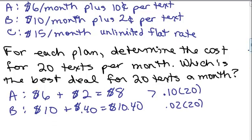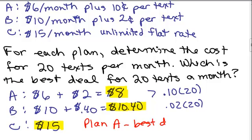What if we had Plan C, how much would it cost? It's $15 period. So we're comparing $8 for Plan A, $10.40 for Plan B, $15 if we use Plan C. So the best deal would be Plan A, best deal for 20 texts.